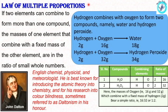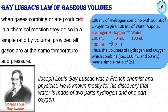John Dalton proposed the law of multiple proportions. The law of gaseous volumes states that when gases are combined or produced in a chemical reaction, they do so in a simple ratio by volume. We have to use a fixed temperature for all gases. This law was proposed by Joseph Louis Gay-Lussac.